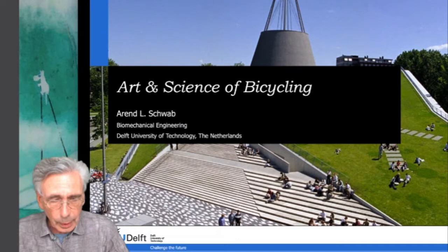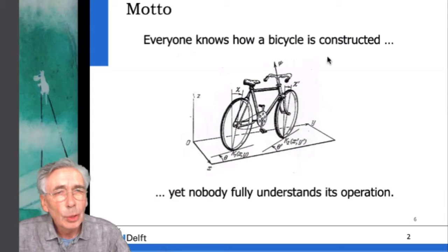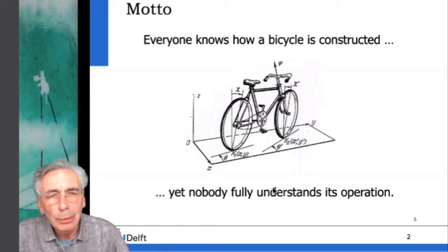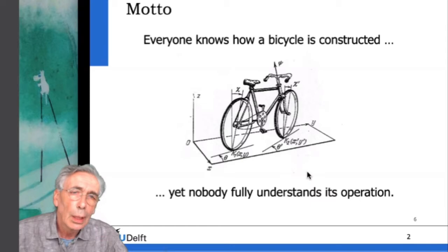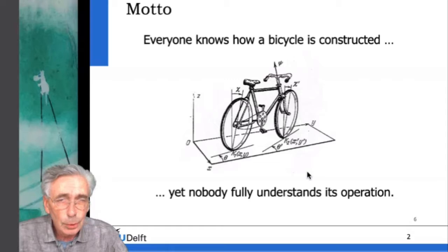The motto of this talk is: everybody knows how a bicycle is constructed — two wheels and a steering assembly — yet nobody really fully understands its operation. By operation I mean questions like: how do you stay upright, how do you balance, how do you go around a corner, can you even cycle backwards?